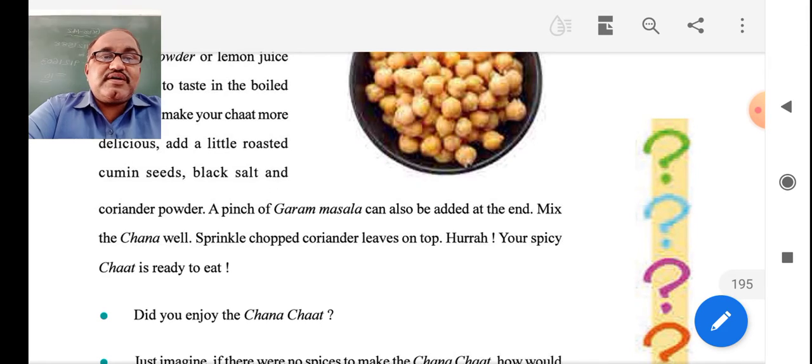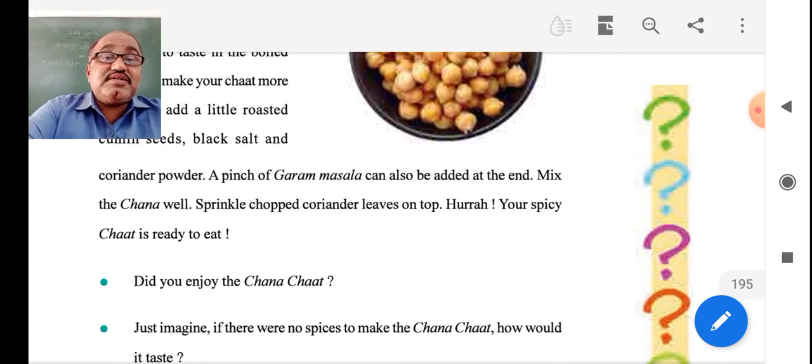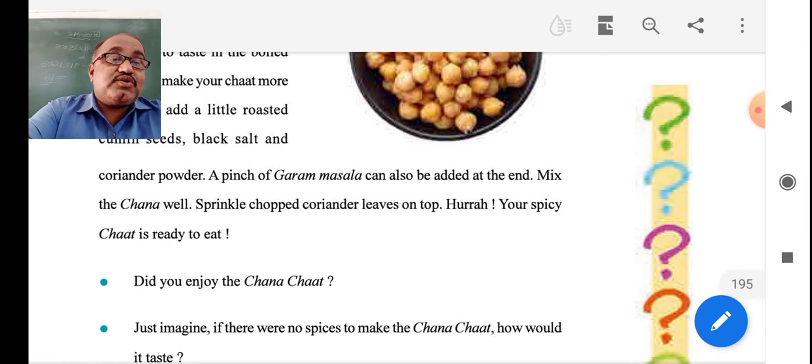A pinch of garam masala can be added at the end. Mix the chana well. Sprinkle chopped coriander leaves on top and your chana chaat is ready.